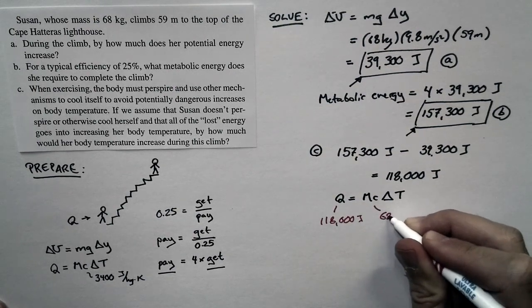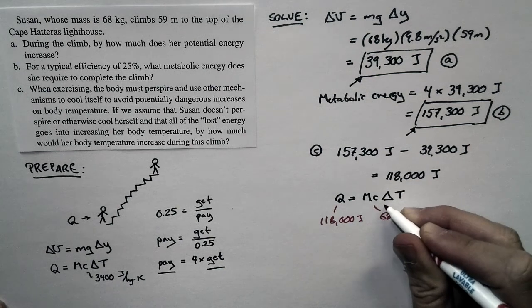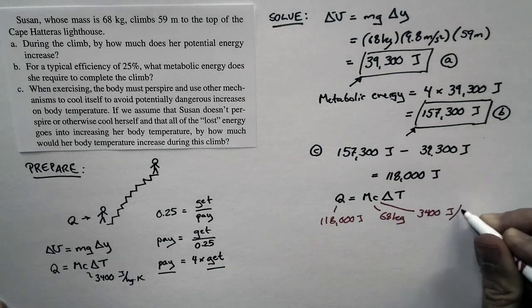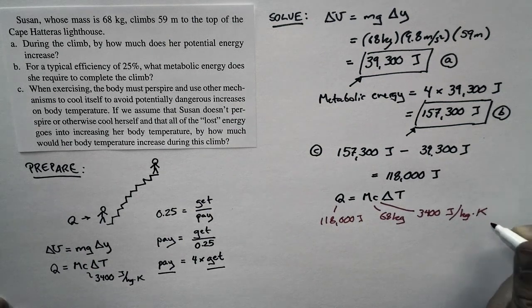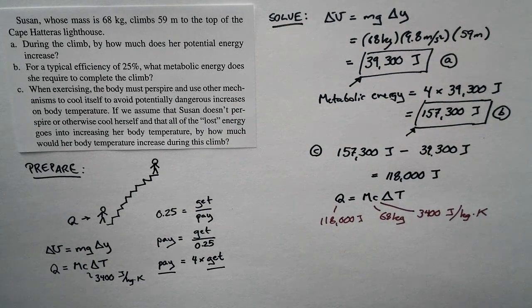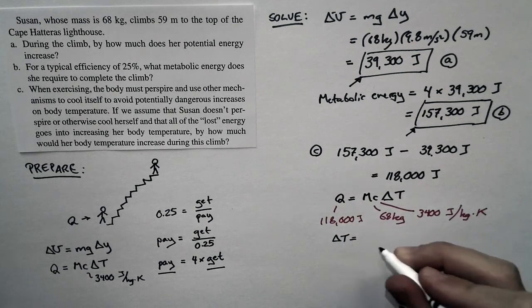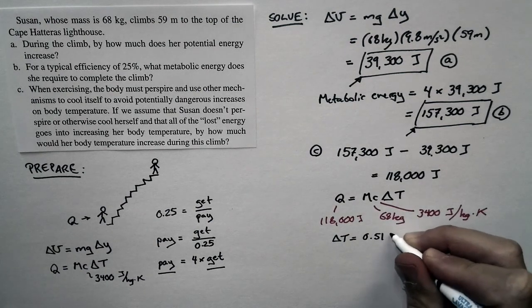Her mass, as we said, is 68 kilograms. The specific heat of the mammalian body is 3,400 joules per kilogram per Kelvin. And so we have everything in hand to calculate the change in temperature. The change in temperature that we get is 0.51 Kelvin.